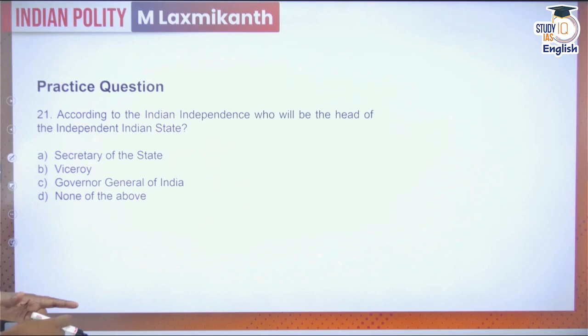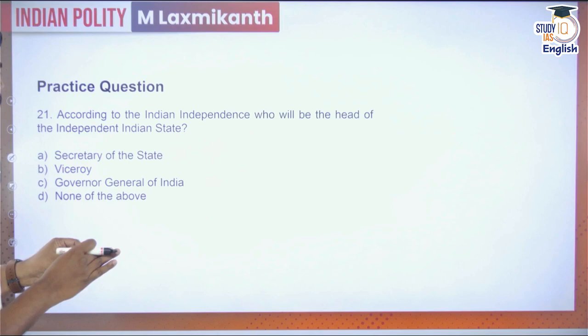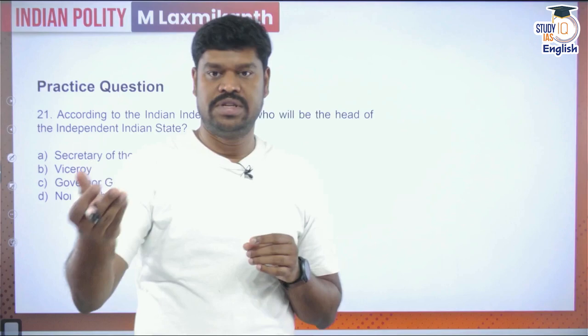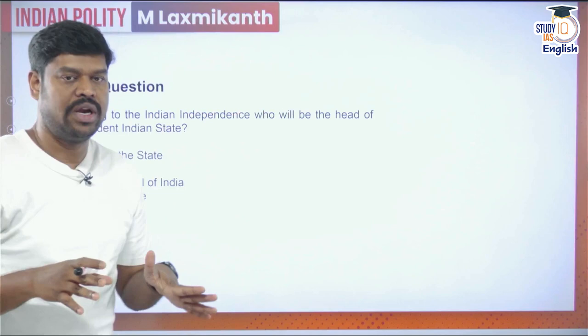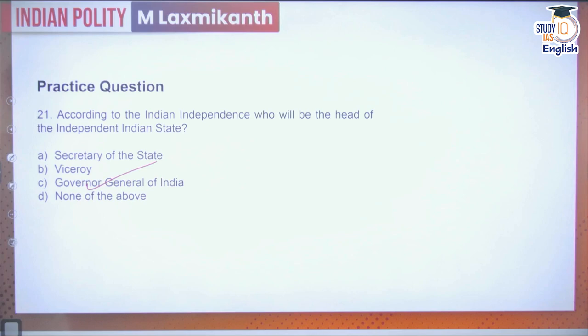Question 21: According to the Indian Independence Act 1947, who would be the head of the independent state? The head of state would be the Governor General of India, and for every state a governor would be the head — both serving as constitutional heads, appointed by the British Crown on the aid and advice of the Dominion Council of Ministers. There was no Secretary of State or Viceroy under the Indian Independence Act 1947. Answer: the Governor General of India.